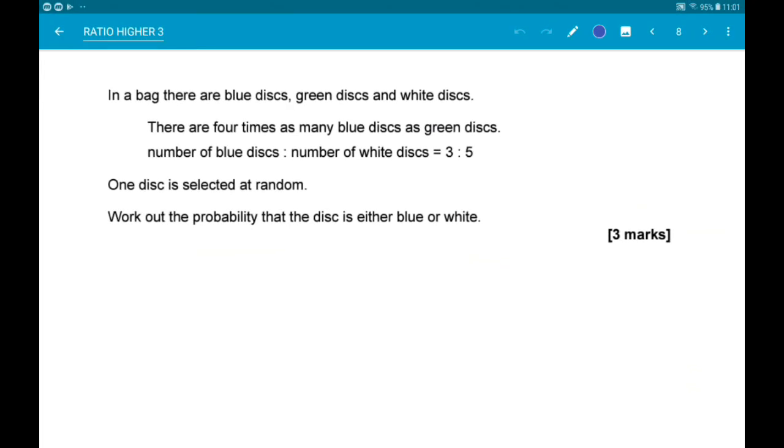Okay then the final question. In a bag, there are blue, green and white discs. There are four times as many blue as green discs. Straight away get the ratio down. Blue to green is 4 to 1. And we're told the number of blue discs to the number of white discs is 3 to 5. So blue to white is 3 to 5. We are then told one disc is selected at random. Work out the probability that the disc is either blue or white. So what we need to do is combine the ratios into a single ratio. Work out how many parts that ratio has. Work out how many parts are either blue or white. And then we can get our answer.